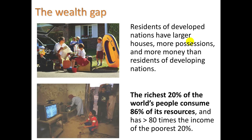And the richest 20% has more than 80 times the income of the poorest 20% — not double or triple, but 80 times. And here we see a family in the U.S. compared to a family in Egypt in terms of their physical possessions — big difference.